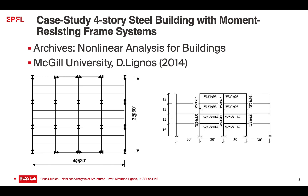We are interested in predicting the behavior of the moment-resisting frames in the east-west direction. You can see a snapshot of the frame here in elevation. The 15 feet is about 4 meters, and 10 feet is more like 3 meters. To get a sense of the cross-sections, W24x131 is equivalent to HEB500, whereas the beams, W27x105, is equivalent to something like IPE500, maybe a little bigger.